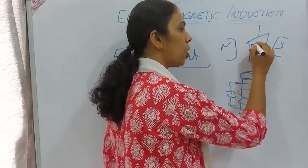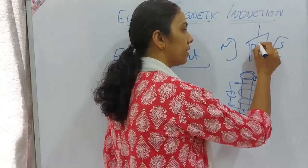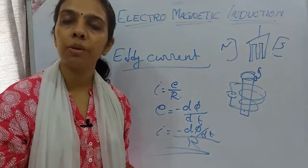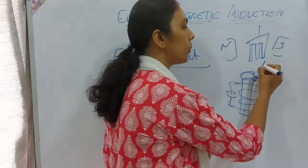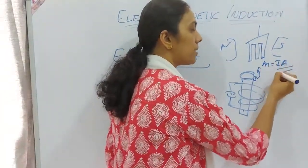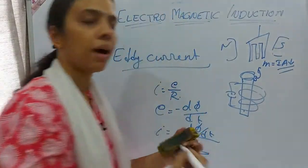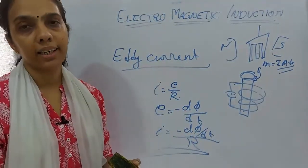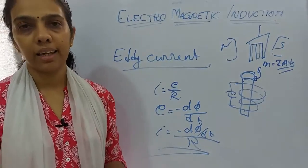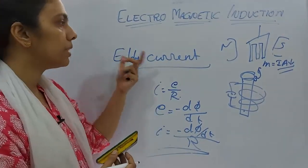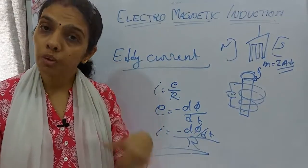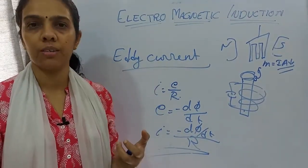If instead of a solid sheet we use one with slots in between, the effective area decreases. Since M = I × A, as area decreases, magnetic moment also decreases, and the damping effect is reduced.